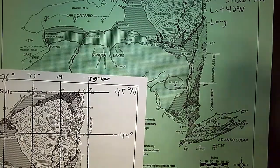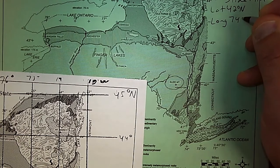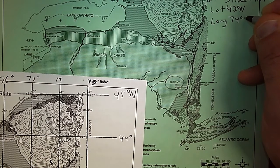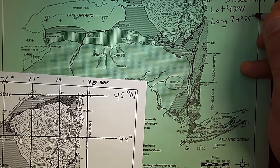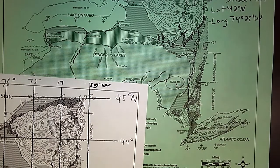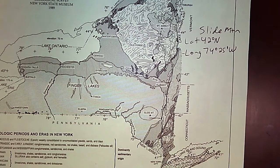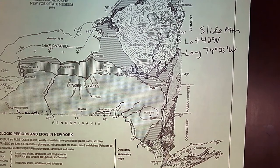It is closer to 74, so it's got to be less than 30 minutes by a little bit. So I would estimate Slide Mountain to be 74 degrees and about 25 minutes. And remember, we're west of the prime meridian, so it's going to be west. In New York State, all the latitude markings are going to be degrees north, and longitude are going to be degrees west. Remember that when you're writing your coordinates.